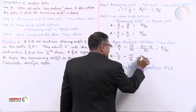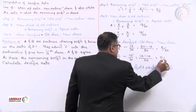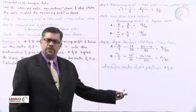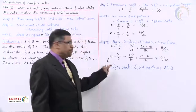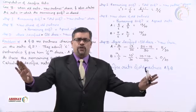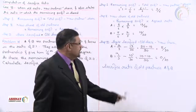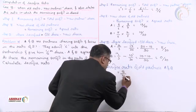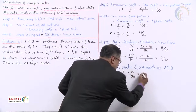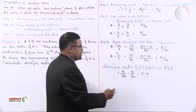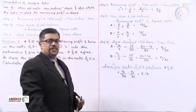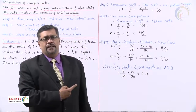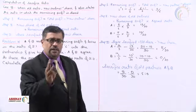B's sacrifice is 0/30, which means B has not sacrificed anything towards the new partner. The entire sacrifice is done only by A. The sacrifice ratio is 5/30 : 0/30, which is 5:0, confirming that B has not sacrificed anything and the entire sacrifice is made by A.